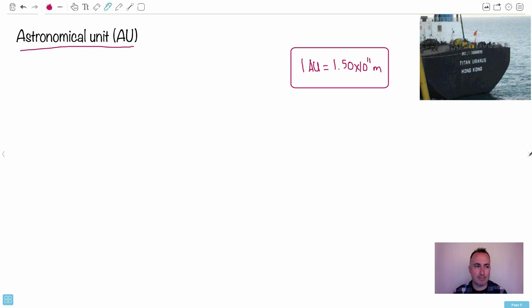Now, let's do an exam question kind of thing. Oh, no, not yet. Wait, we have an astronomical unit. By the way, when I saw this ship, it's called Titan Uranus. Because Titan is one of Saturn's moons and Uranus is one of the planets around our solar system. So Titan Uranus.